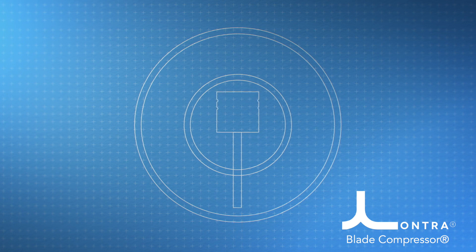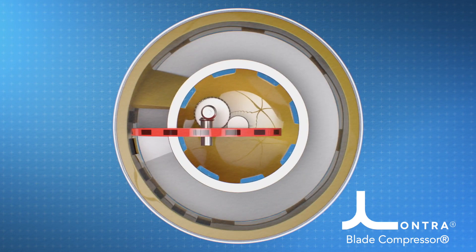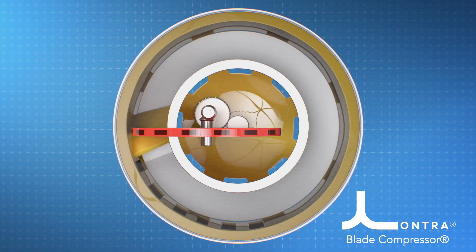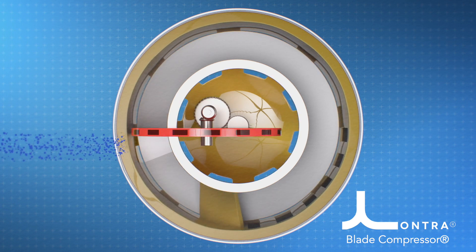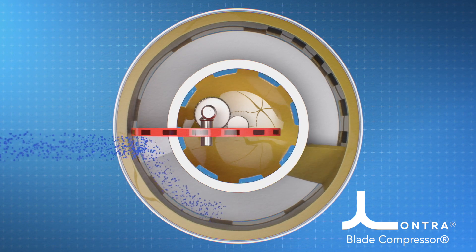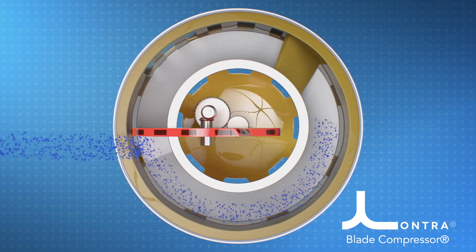The piston becomes a blade and a disc divides a donut shaped chamber. Gas is drawn in behind the blade through a constantly open inlet port, completely filling the chamber.